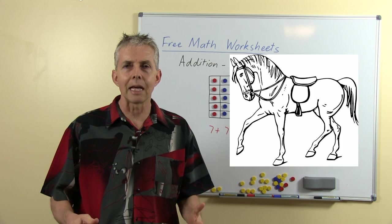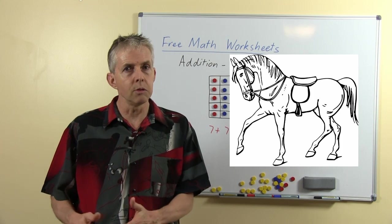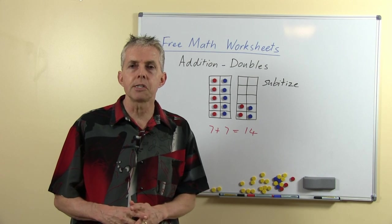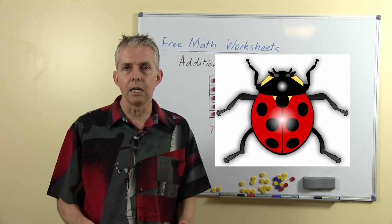Double 2 is 4. We can use the legs of a chair or a table or the legs on an animal like a cow or an elephant or something like that. Double 3 is 6, we can use the legs on an insect.